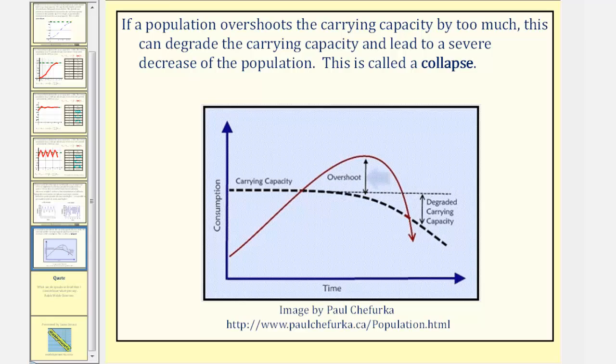Looking at the graph here below, here's the overshoot. And because the overshoot is so high above the carrying capacity, notice how this degrades the carrying capacity. And results in a collapse, which is a dramatic decrease in the population, which we see here.